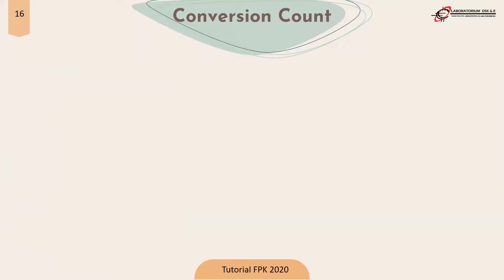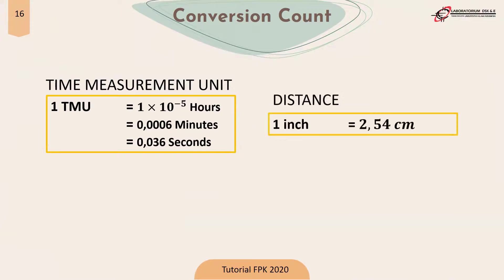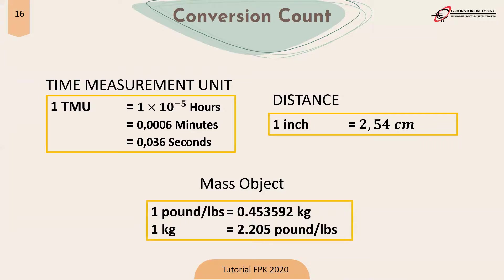Next are the conversion counts. For TMU: one TMU equals 1×10⁻⁵ hours, equals 0.006 minutes, equals 0.036 seconds. For distance: one inch equals 2.54 centimeters. For mass: one pound (LBS) equals 0.453592 kilograms, and one kilogram equals 2.205 pounds.